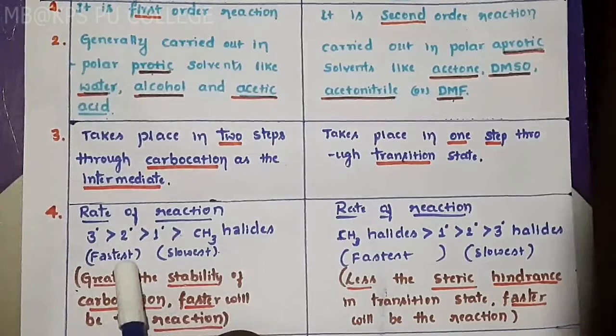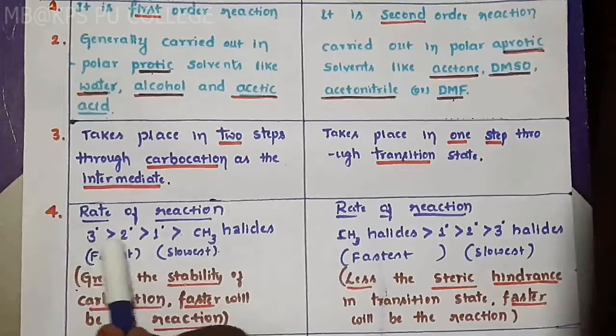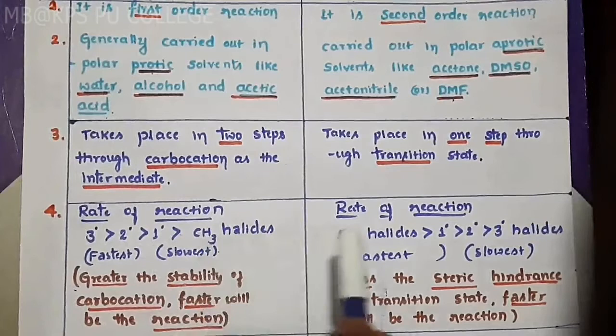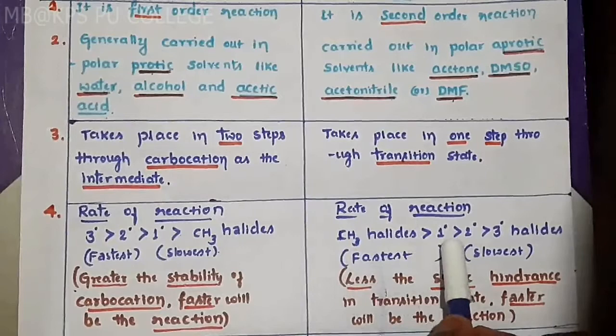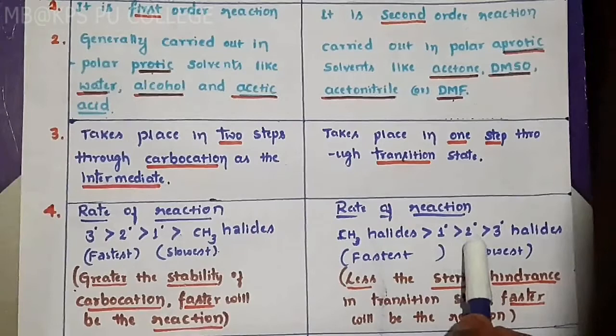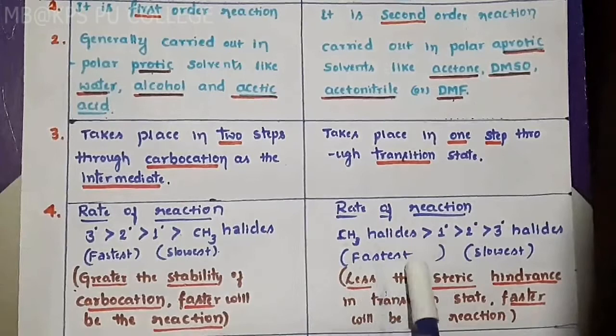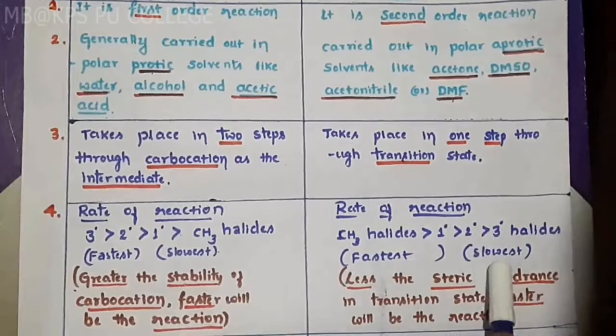In SN1 mechanism, the reactivity nature is higher compared to SN2. But in SN2, the reactivity order is: CH3 halides is greater than primary halides, primary halides greater than secondary halides, and secondary greater than tertiary alkyl halides. So methyl and primary are fastest in SN2, while secondary and tertiary are slowest.